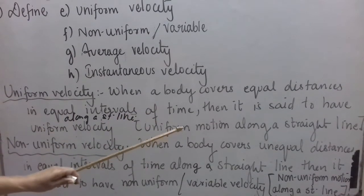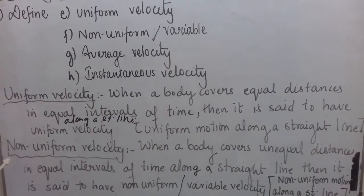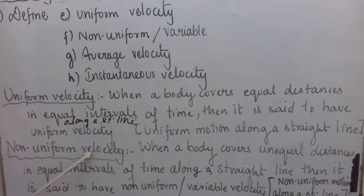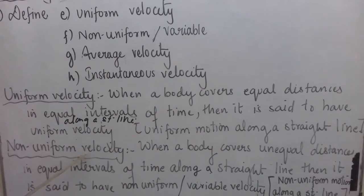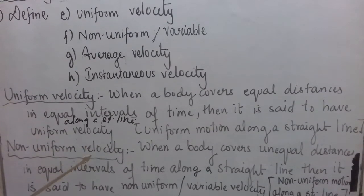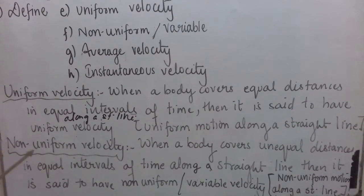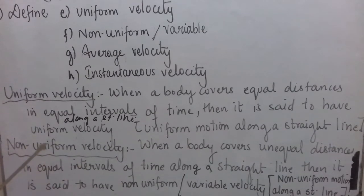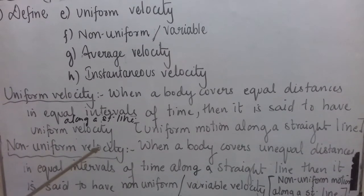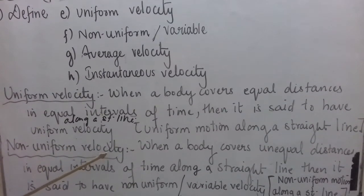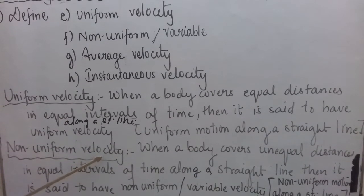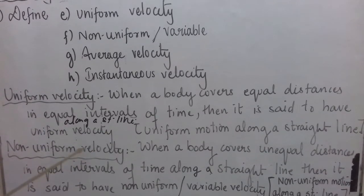Now, non-uniform velocity or variable velocity. We know that velocity has two things: magnitude as well as direction. So if any of these two things change, or both of them change, then we can say that the body is having non-uniform velocity.